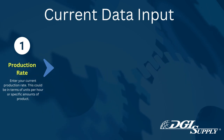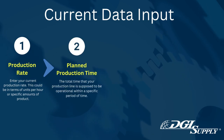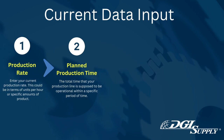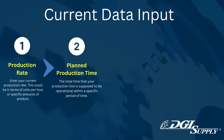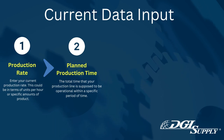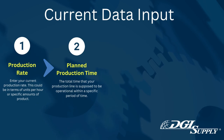2. Planned Production Time. The total time that your production line is supposed to be operational within a specific period of time.